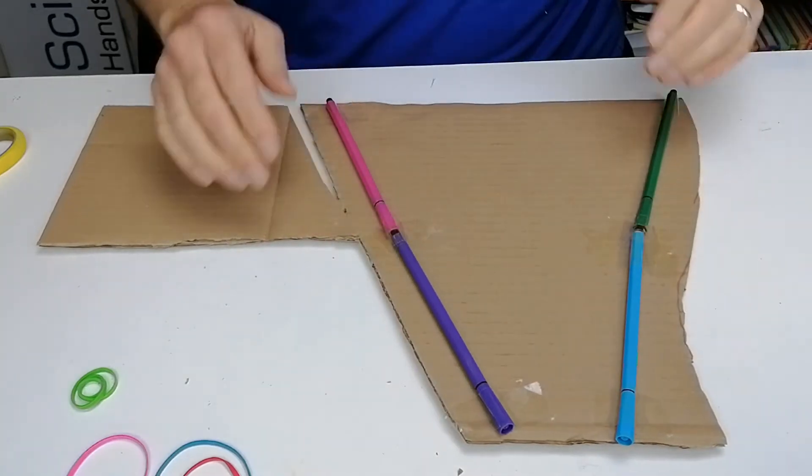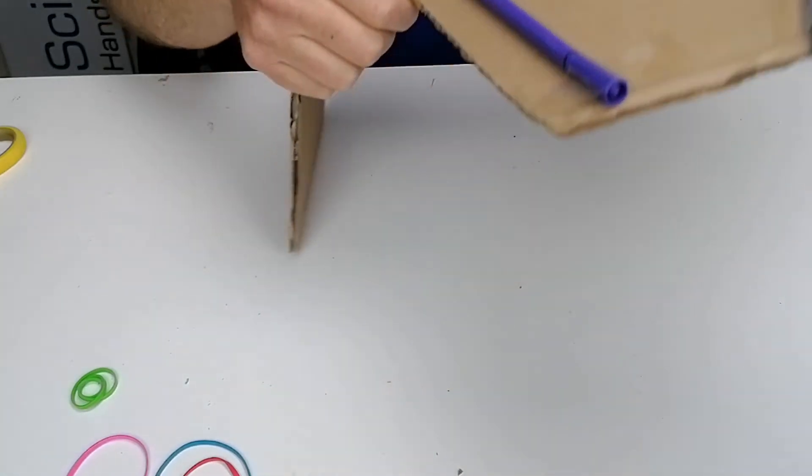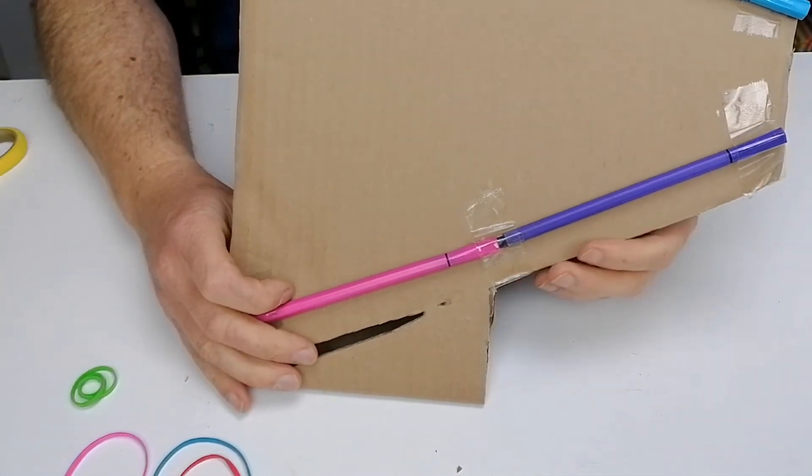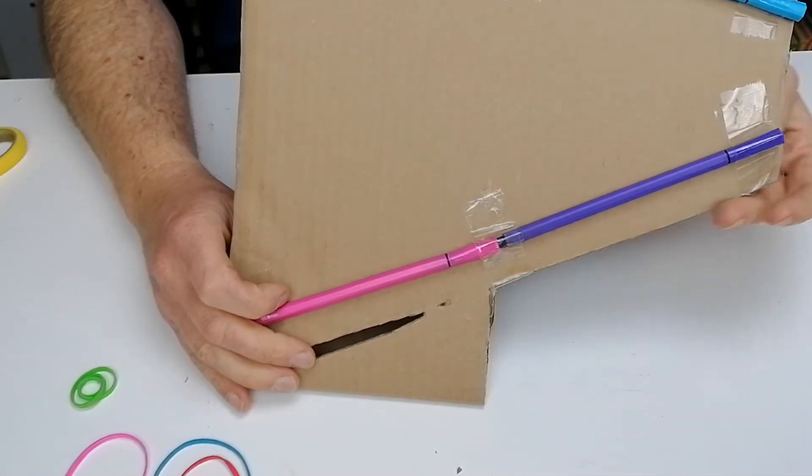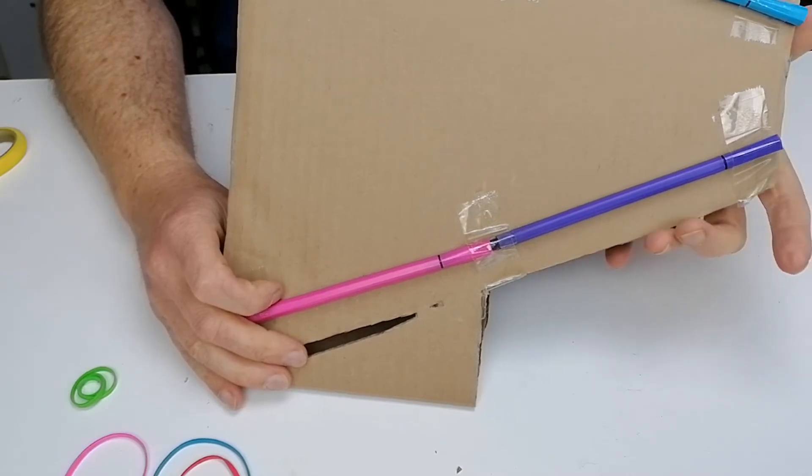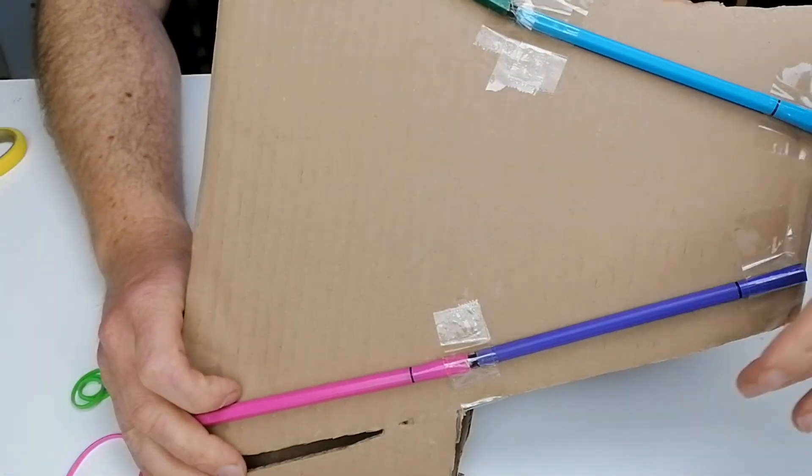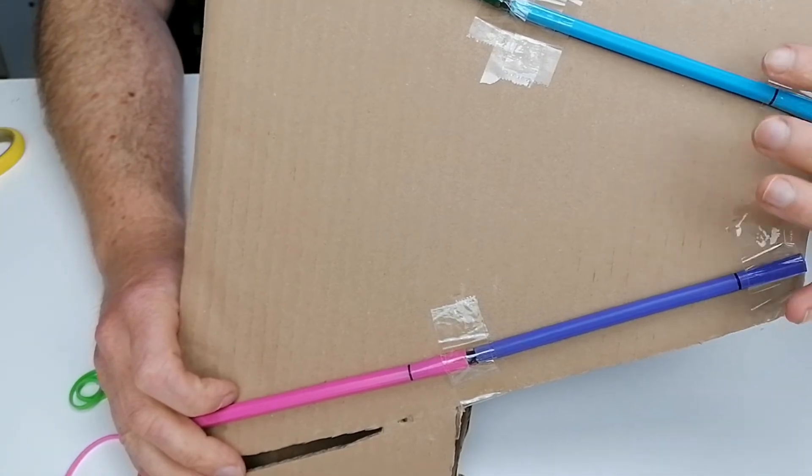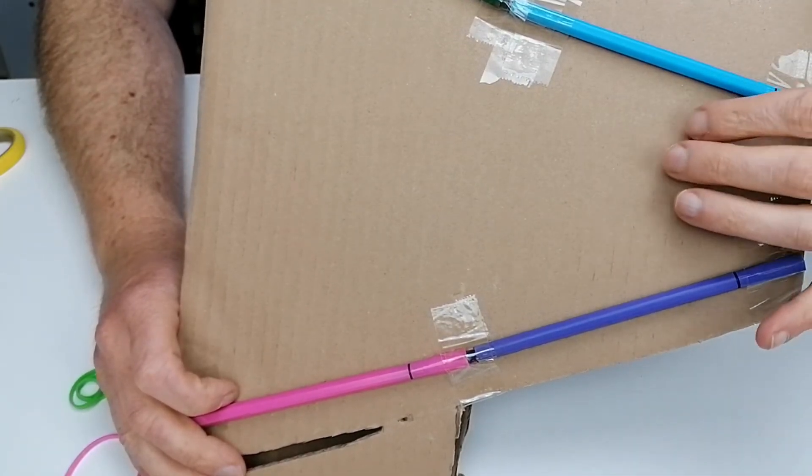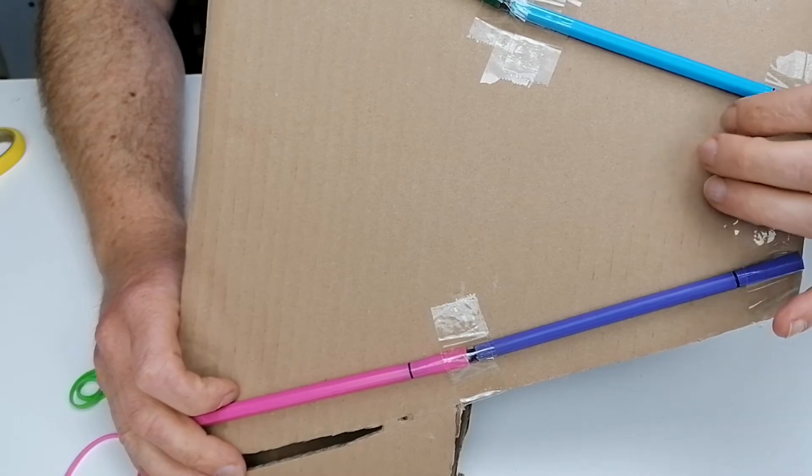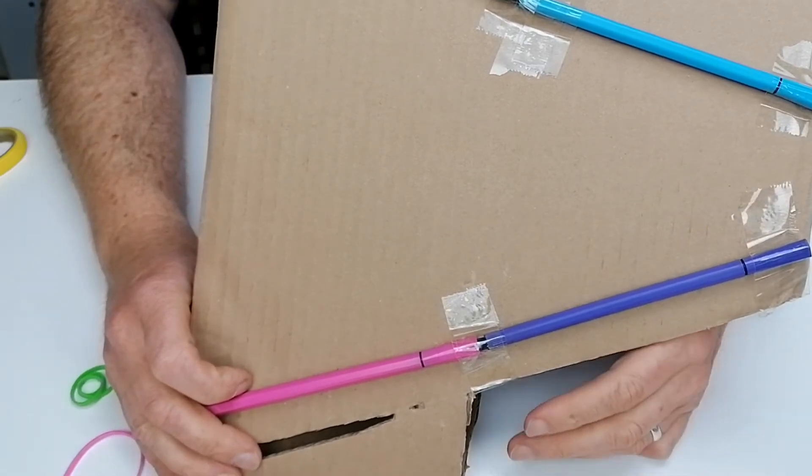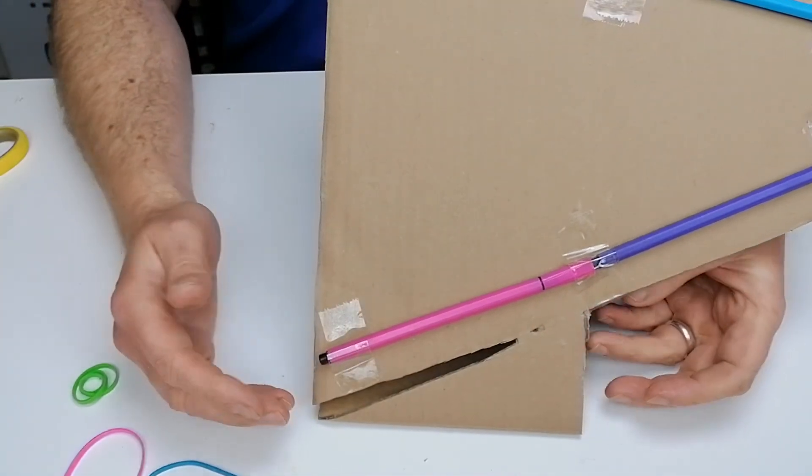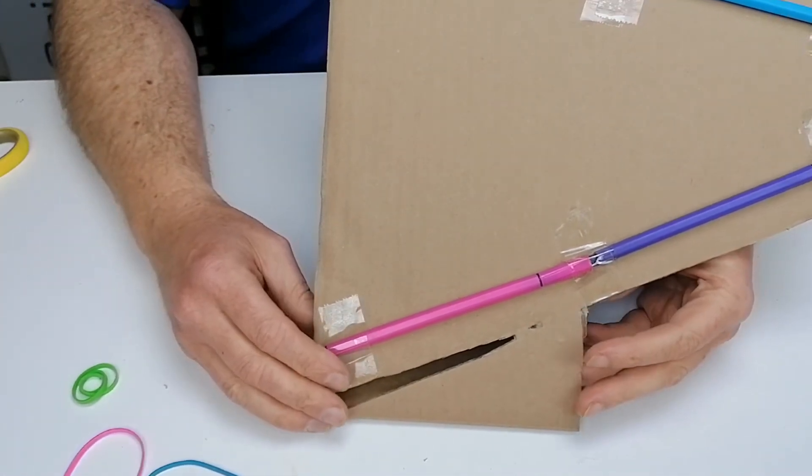Now once you've done that, what I've done is I have cut out this shape completely, so I've taken this off. Because the rubber bands are now going to go around this section, and these markers are going to act as a bridge to keep the elastic band away from the cardboard to give you the vibration and give you the sound. Down here, if you take away the whole thing, then your harp won't be able to stand up.